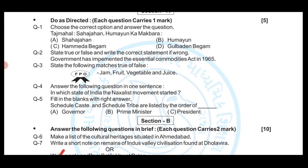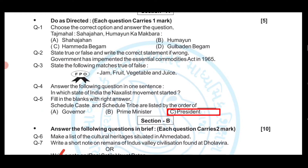Question number five: Fill in the blank with the right answer. 'Schedule Caste and Schedule Tribe are listed by the order of ___.' The options are: A) Governor, B) Prime Minister, C) President. The answer is President. These are the answers of Section A.